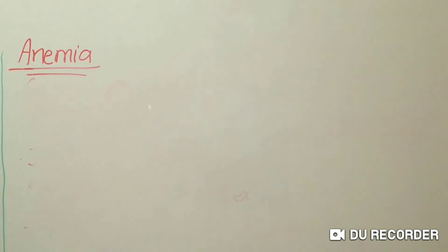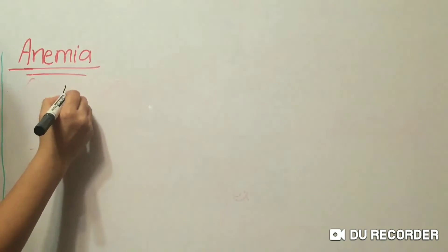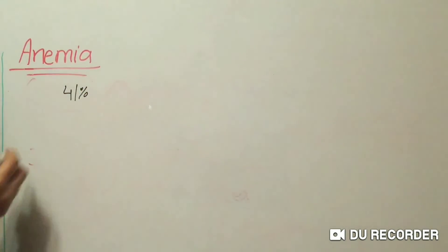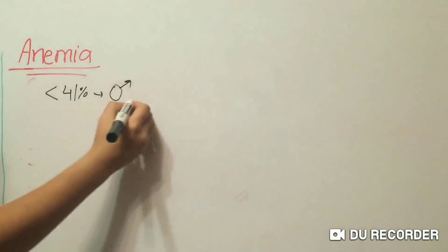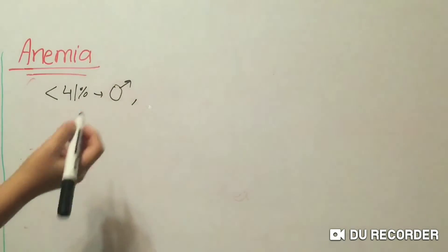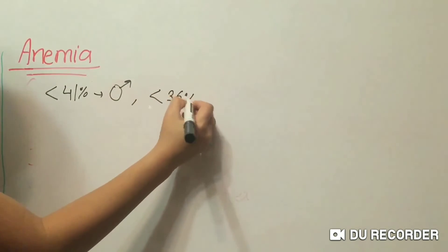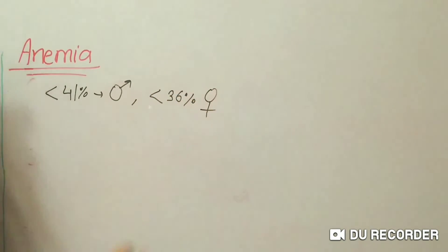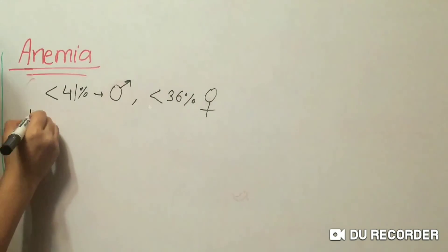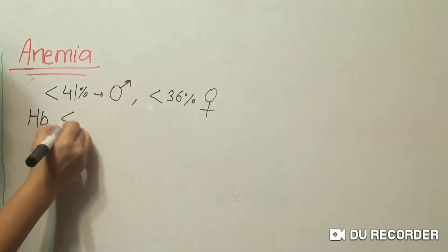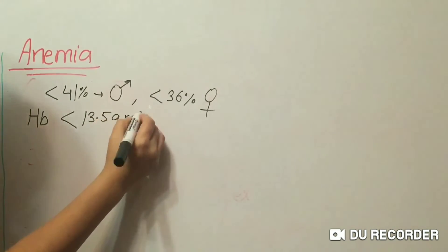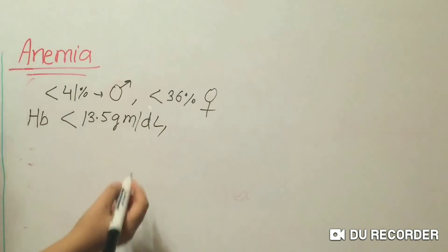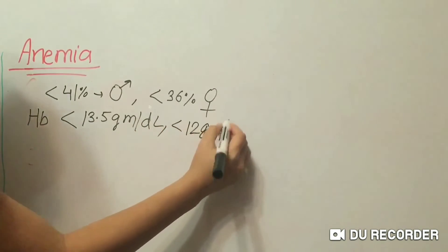The normal value of RBC or hematocrit level is 41% in males and 36% in females. The normal value of hemoglobin in males is 13.5 grams per deciliter and in females 12 grams per deciliter.